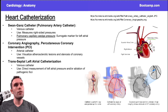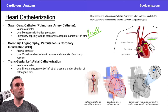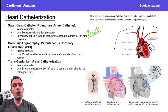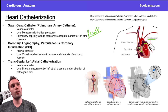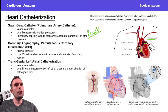As we advance the catheter toward the pulmonary capillaries, we get the wedge pressure, abbreviated as PCWP — pulmonary capillary wedge pressure. This is a surrogate marker for left atrial pressure. It doesn't tell you exactly what the left atrial pressure is; it just gives you an idea of what the left atrial pressure will be.